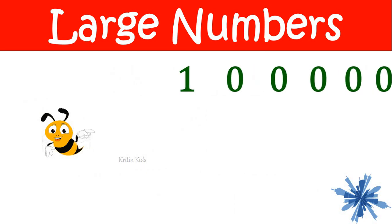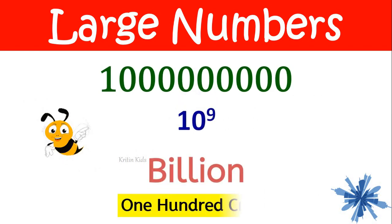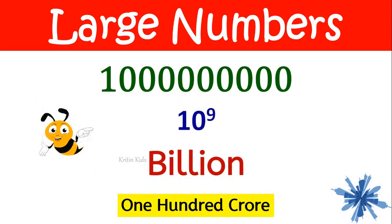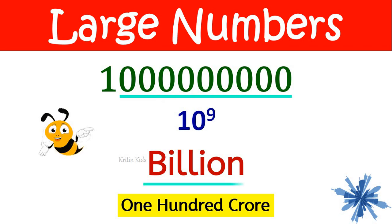Now if I add one more zero, it becomes billion. Billion is called as one hundred crore. One followed by nine zeros is one billion.